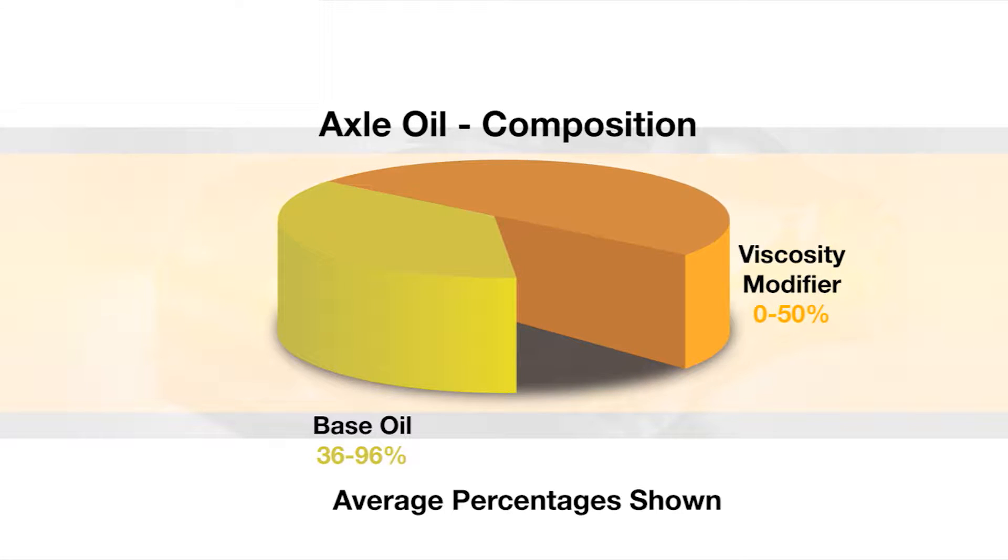There may be no viscosity modifier, or it can be as high as 50 percent. A pour point depressant, or PPD, may be added up to 2 percent of the total oil volume. Finally, the axle oil additives might be from 4 to 12 percent.